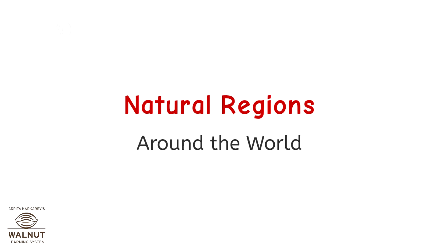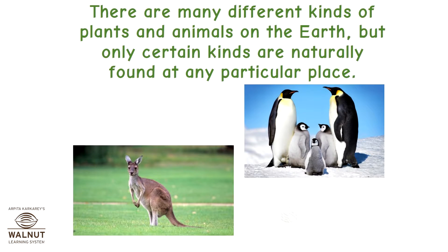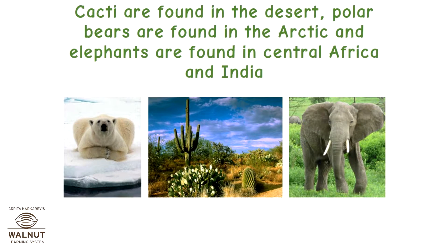Natural regions around the world. There are many different kinds of plants and animals on the earth, but only certain kinds are naturally found at any particular place. Cacti are found in the desert, polar bears are found in the Arctic, and elephants are found in Central Africa and India.